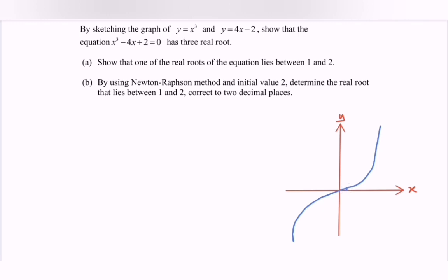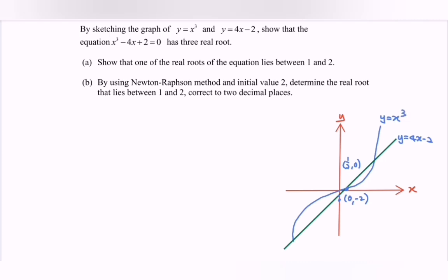In order to find the y-intercept, where x = 0, we get y = -2. So the coordinates are (0, -2) and (1/2, 0). So we have the graph y = 4x - 2 and y = x³. Notice that from here we already show that we have 3 real roots: number 1, number 2, and number 3.